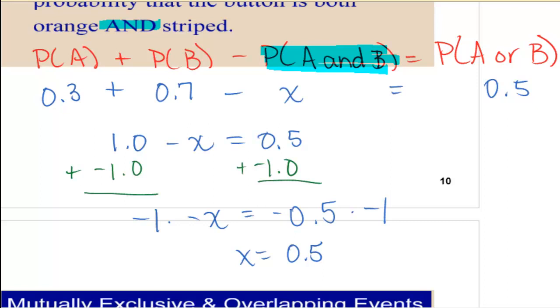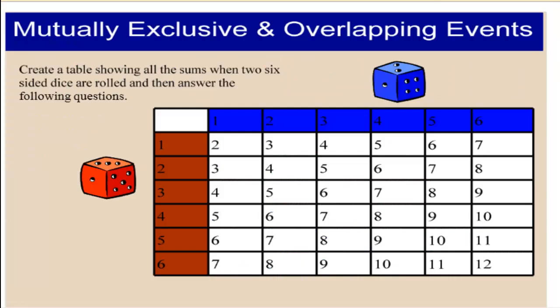You can plug this in to see if it works. If I substitute it in, does 0.5 make sense? It does, because 0.3 plus 0.7 equals 1 minus 0.5 equals 0.5.